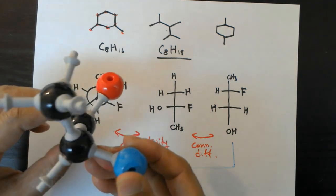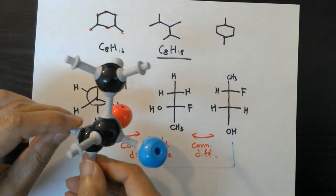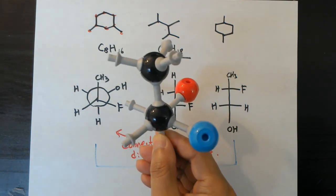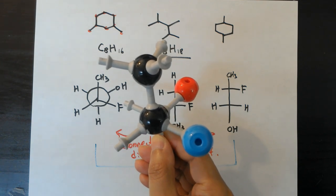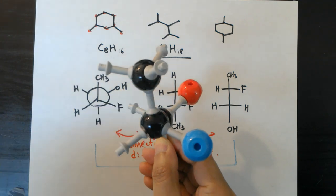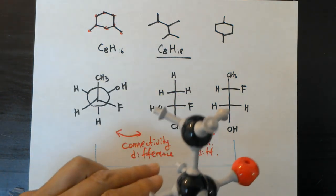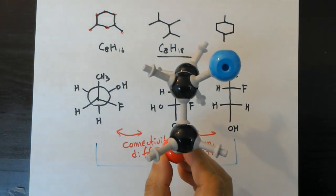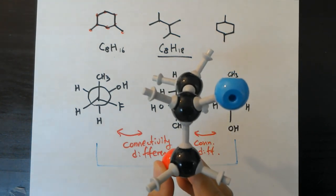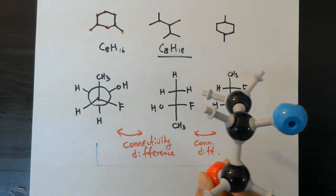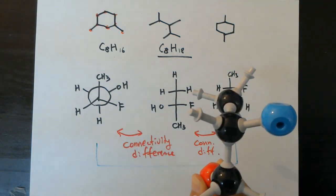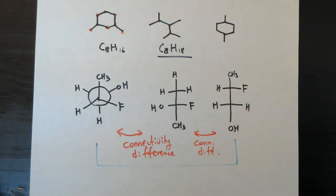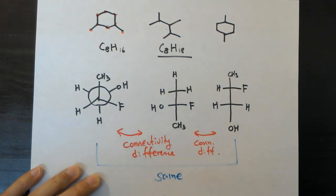To help visualize, using a molecular model: the carbon behind holds OH and H, and the front carbon holds F (blue ball) and the methyl group. If you turn the OH and flip the molecule 90 degrees, you can see the methyl group and OH going away from you — on the top and bottom — while fluorine and hydrogen go to the sides. The two hydrogens line up perfectly. They are the same compound — they are superimposable.